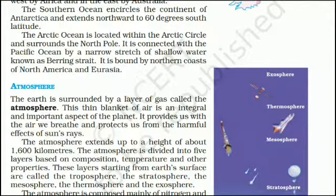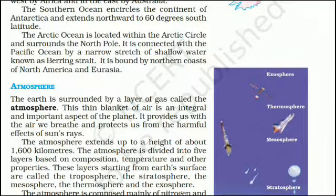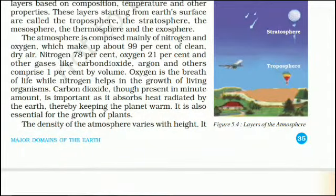Atmosphere: The Earth is surrounded by a layer of gas called the atmosphere. This thin blanket of air is an integral and important aspect of the planet. It provides us with the air we breathe and protects us from the harmful effects of the sun's rays. The atmosphere extends up to a height of about 1,600 kilometers. It is divided into five layers: the troposphere, the stratosphere, the mesosphere, the thermosphere and the exosphere. The atmosphere is composed mainly of nitrogen (78%) and oxygen (21%), which make up about 99% of clean, dry air. Other gases like carbon dioxide and argon comprise 1% by volume.